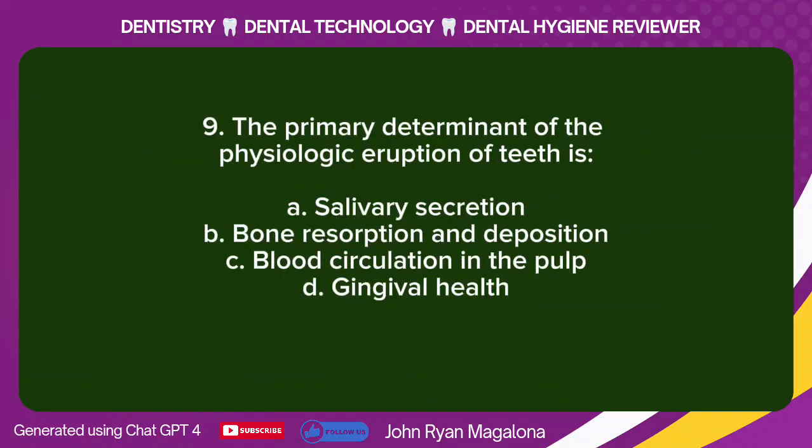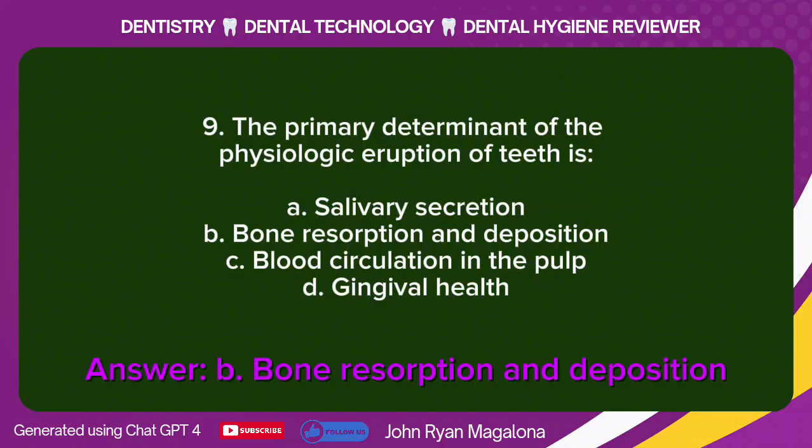Question 9: The primary determinant of the physiologic eruption of teeth is: A. Salivary secretion. B. Bone resorption and deposition. C. Blood circulation in the pulp. D. Gingival health. Answer: B. Bone resorption and deposition.